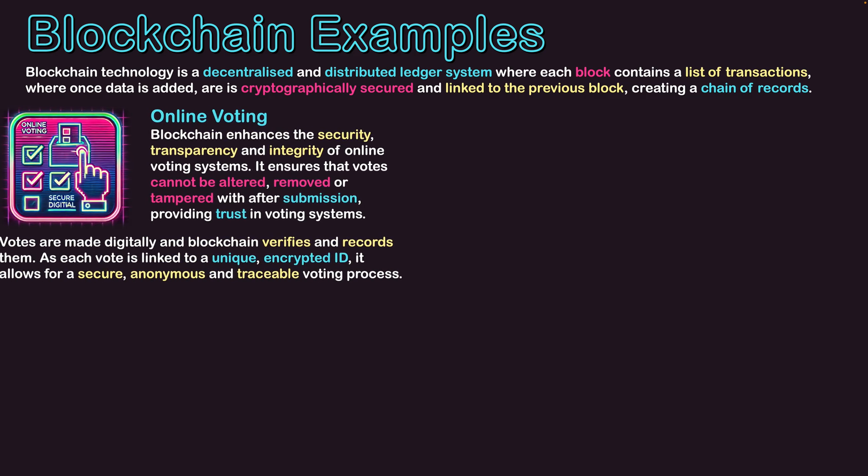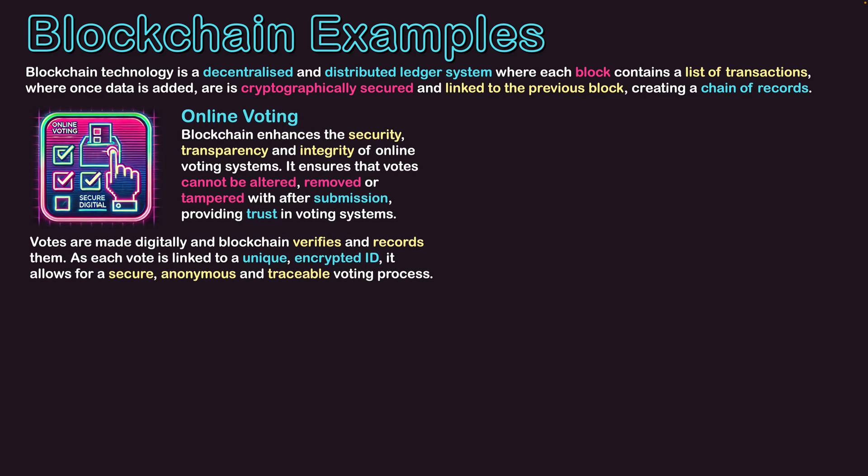The first one we'll take a look at is online voting. Blockchain enhances the security, transparency and integrity of online voting systems. It ensures that votes cannot be altered because they're cryptographically written in a way that they can't be changed, removed or tampered with after submission, providing trust in voting systems.